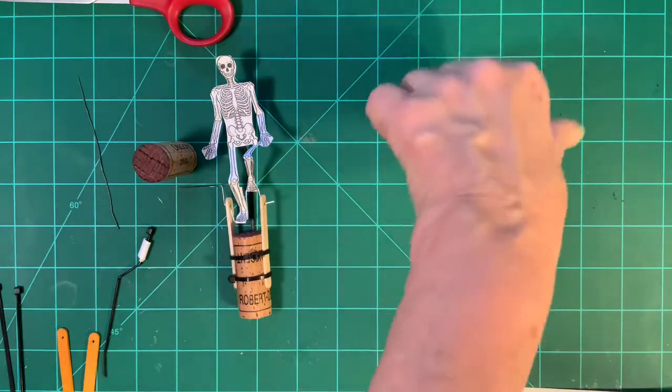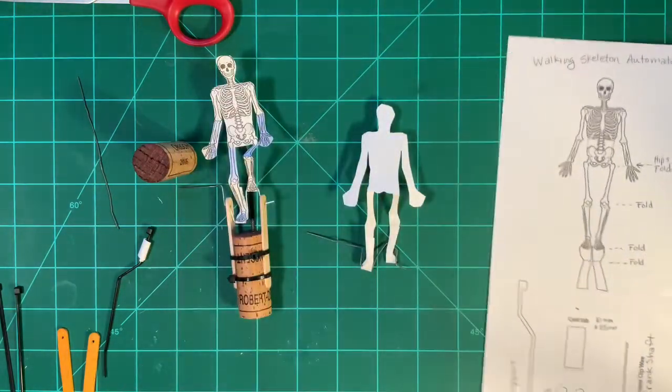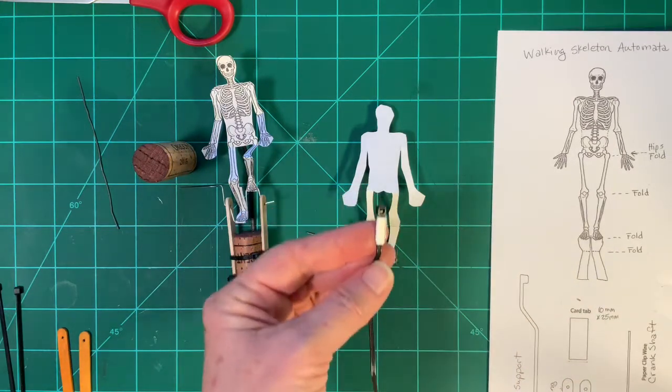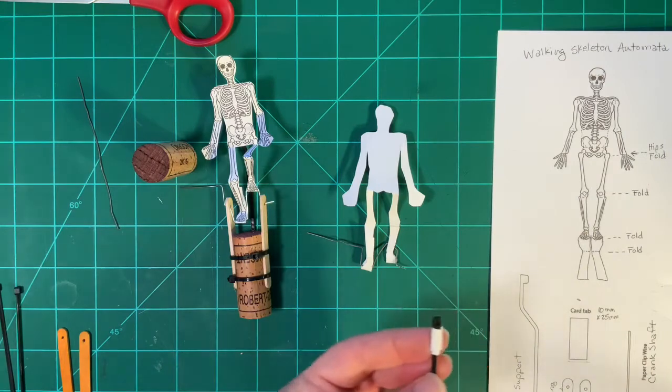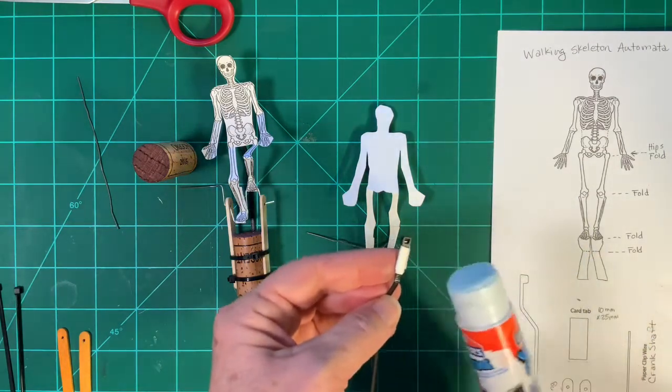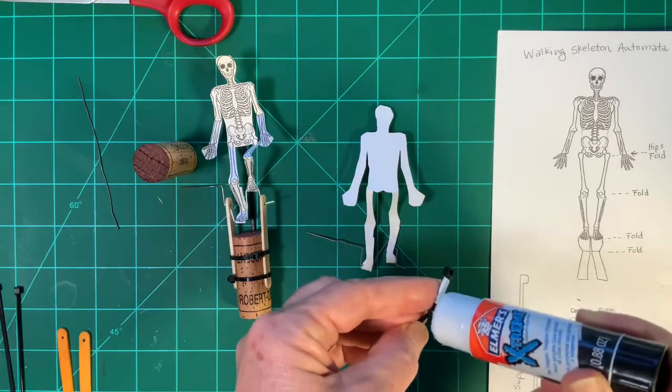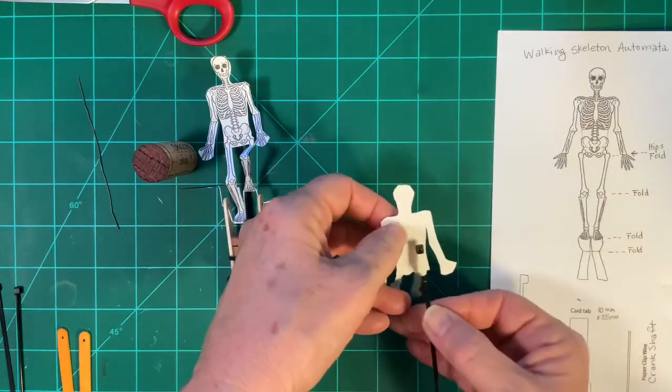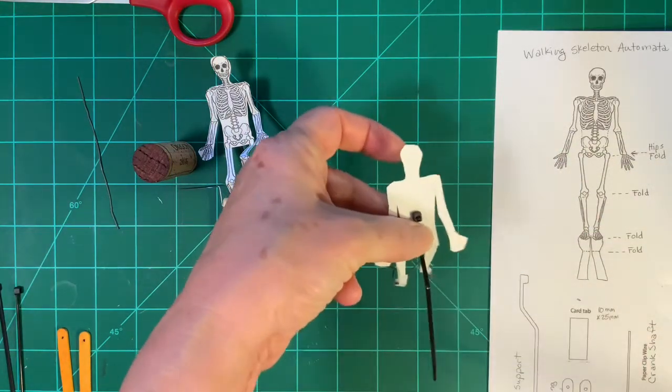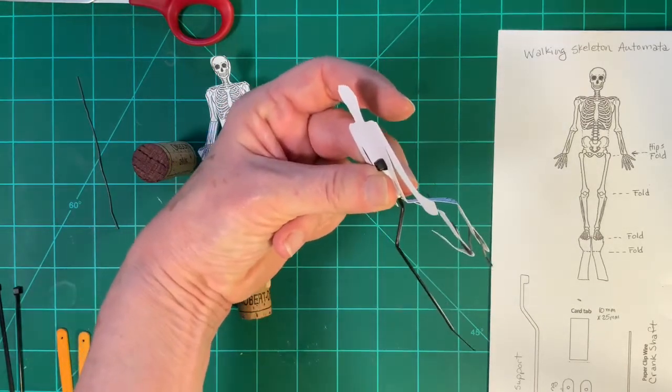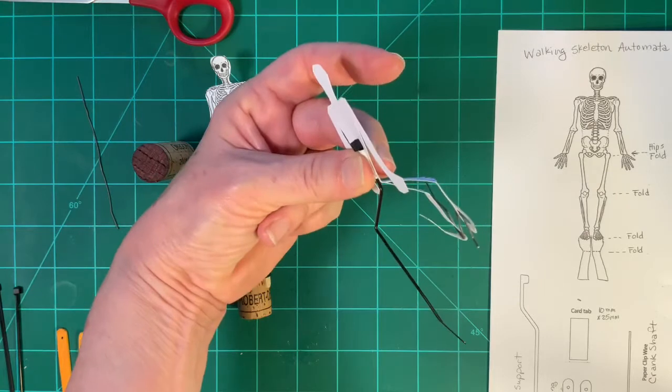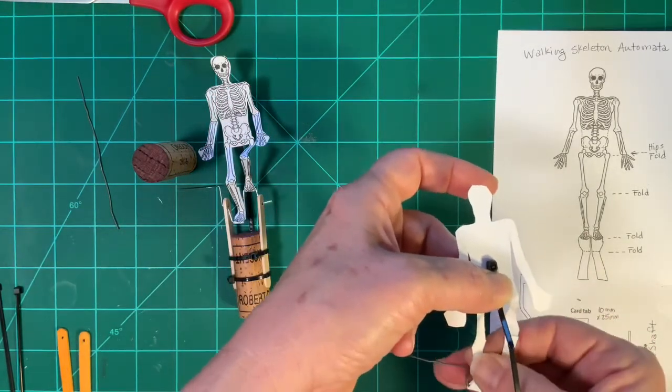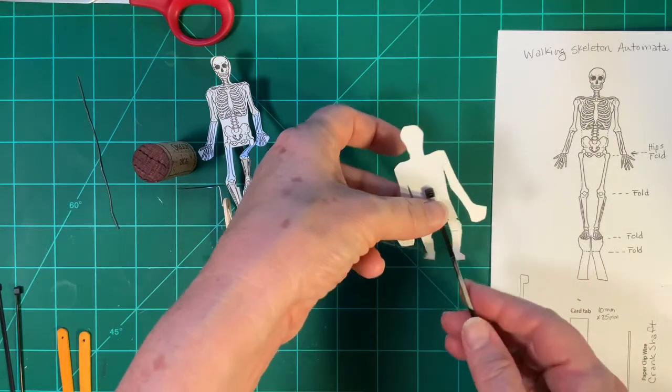Now we are going to flip it over. Take the support that is made from the zip tie and that little card tab. We're going to put a bunch of glue on that, and it will be glued to the middle of the bottom of the skeleton in this direction. It helps it support and push it a little bit away from the cork. We'll set that side to dry.